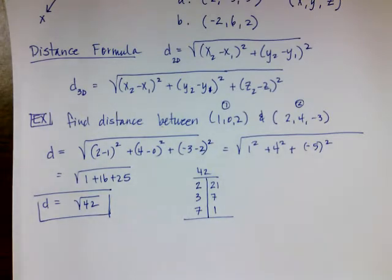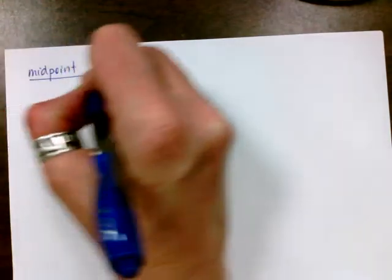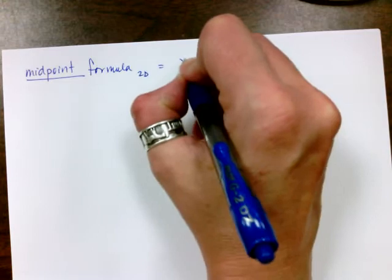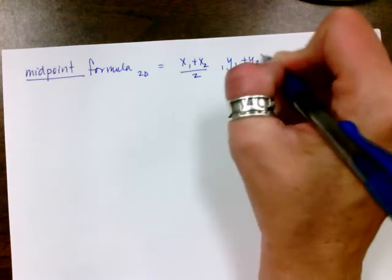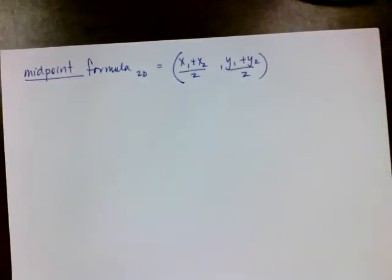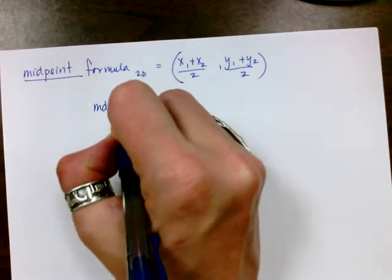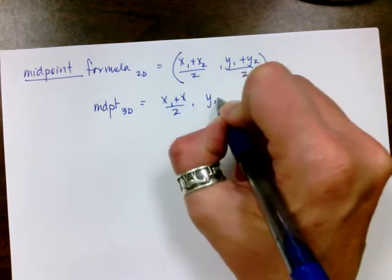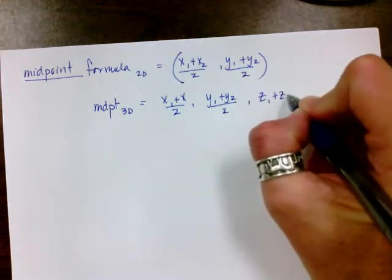Now we have to do the midpoint — and again it's not that much different than in two dimensions. The midpoint formula in 2D is the average of the x's and the average of the y's. In three dimensions, the midpoint is the average of the x's, the average of the y's, and I can't forget the z's — the average of the z's.